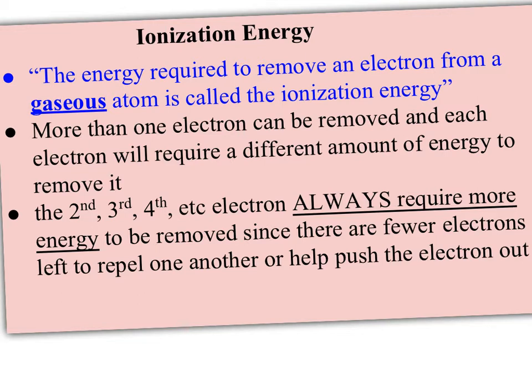The second, third, fourth, and so on — each electron you remove always requires more energy than the previous electron. That's because there are always going to be fewer electrons left to repel the remaining electrons and help push the electron out, and you're going to be moving to electrons that are closer and closer to the nucleus and held more tightly.